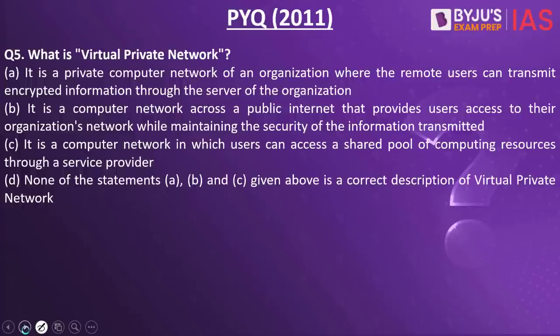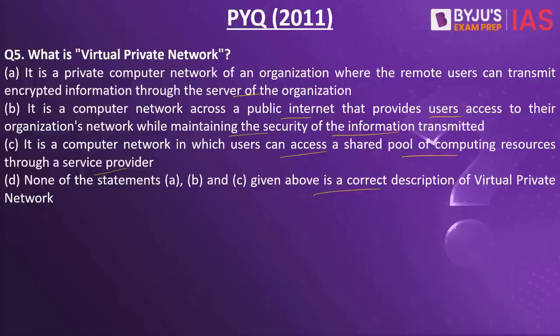Now let's look into the next practice question: What is a virtual private network? Option A: a private computer network of an organization where remote users can transmit encrypted information through the server of the organization. Option B: a computer network across a public internet that provides users access to their organization's network while maintaining the security of information transmitted. Option C: a computer network in which users can access a shared pool of computing resources through a service provider. The answer is B — a computer network across a public internet that provides users access to their organization's network while maintaining security. This is a previous year question from 2011.